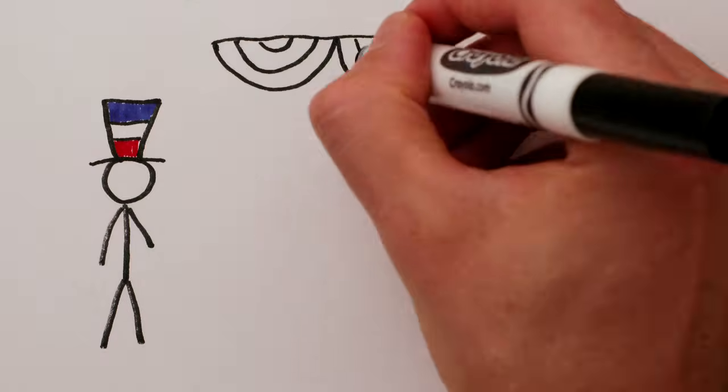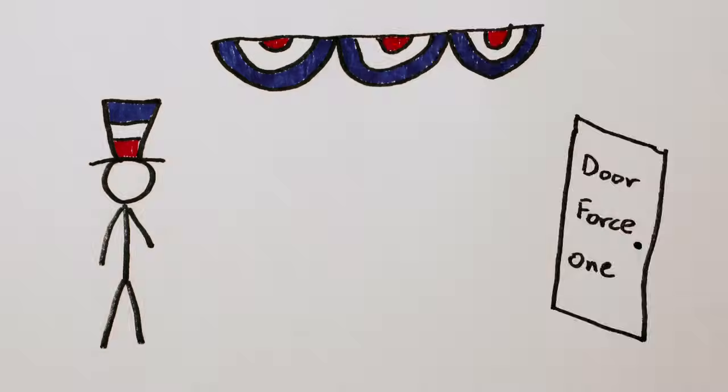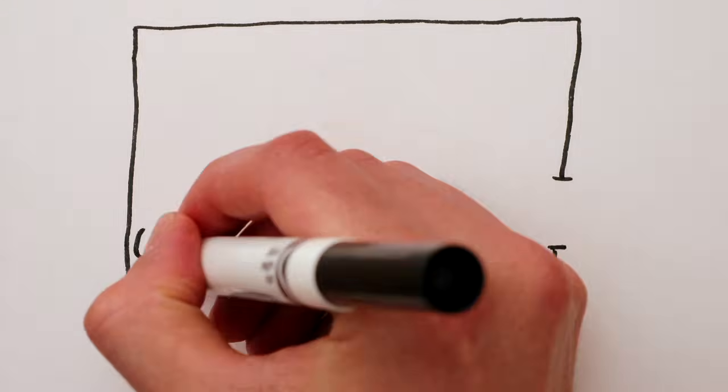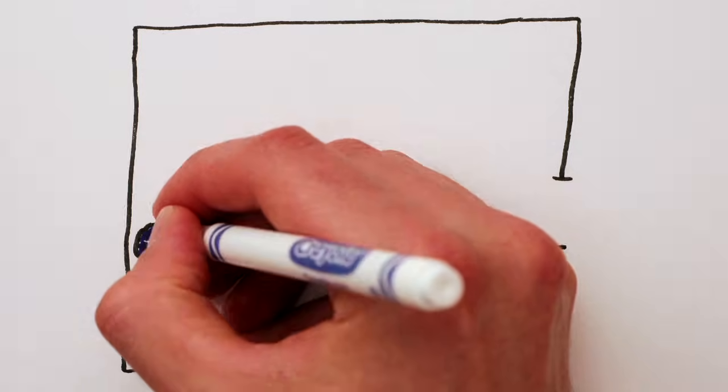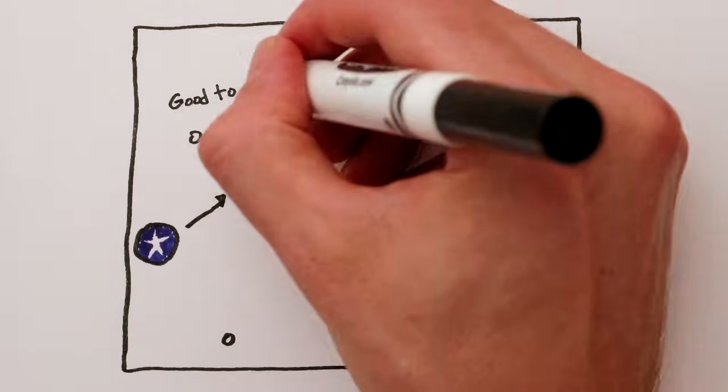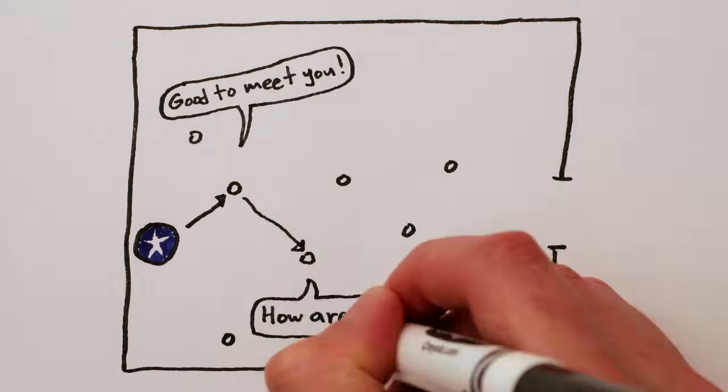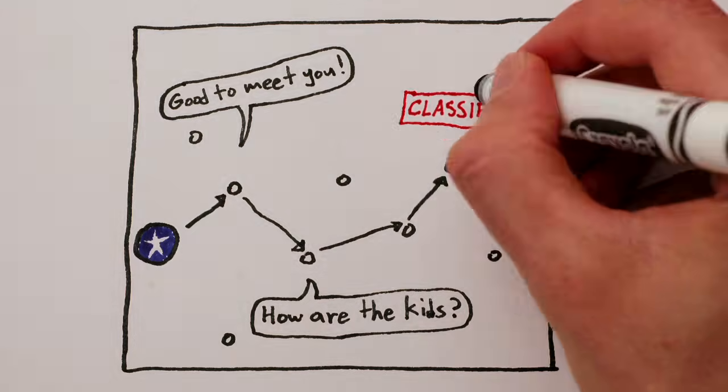It's like the President of the United States trying to cross a room. If the room is empty, he can walk across directly. But if the room is full of people all of whom want to shake the President's hand, even though he walks from person to person at full presidential speed, he'll get slowed down along the way.